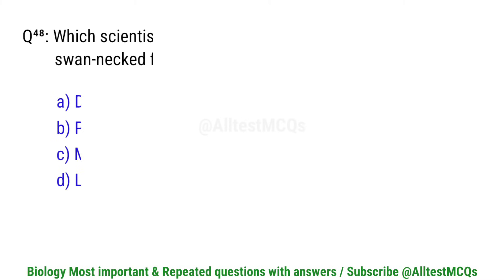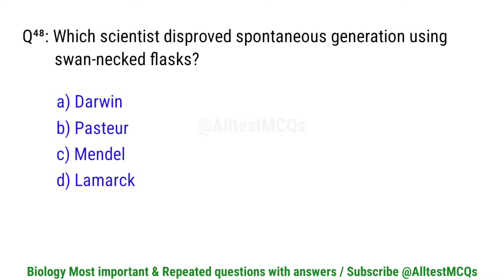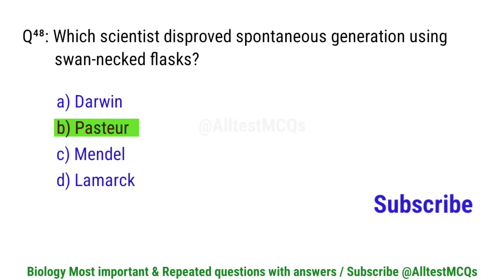Question number 48. Which scientist disproved spontaneous generation using a swan-necked flask? Correct option is B. Pasteur.